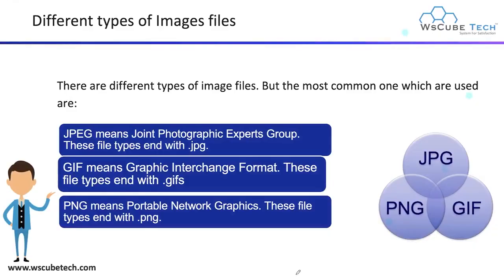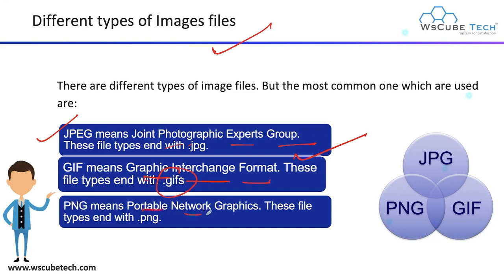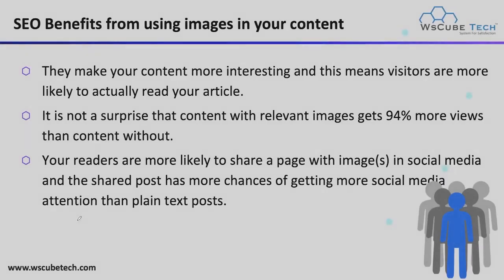Next, we have different types of image files. When you upload any image file on your webpage, there are basically three types: JPEG (Joint Photographic Experts Group) with a .jpg or .jpeg extension; GIF (Graphics Interchange Format) ending with .gif; and PNG (Portable Network Graphics) ending with .png.